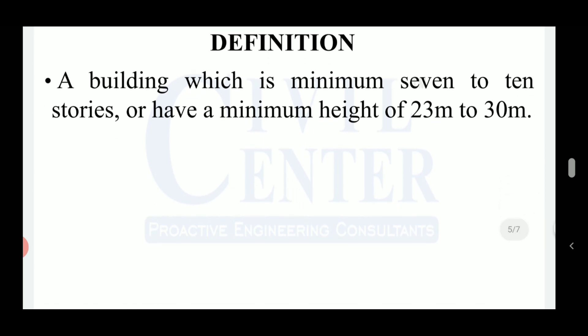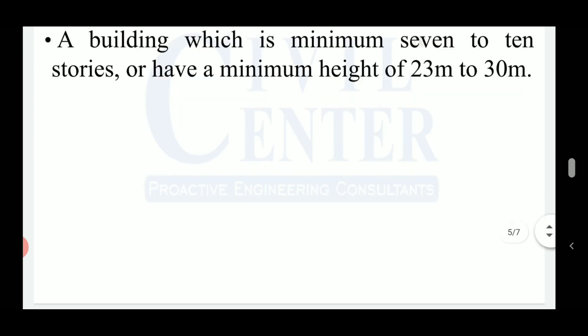Another criterion is a building which has a minimum of 7 to 10 stories or a height between 23 to 30 meters. Though the definition differs by location, roughly any building with a minimum of 7 to 10 stories and a minimum height between 23 to 30 meters is defined as a high-rise building. With a building being high-rise versus non-high-rise, the design provisions change, as does the criteria of the approval authority — the rules of planning also change.